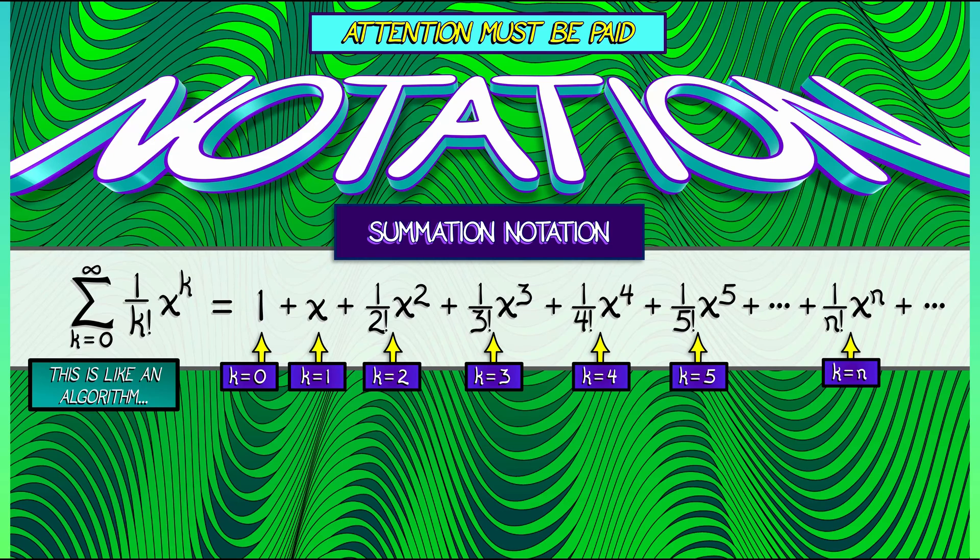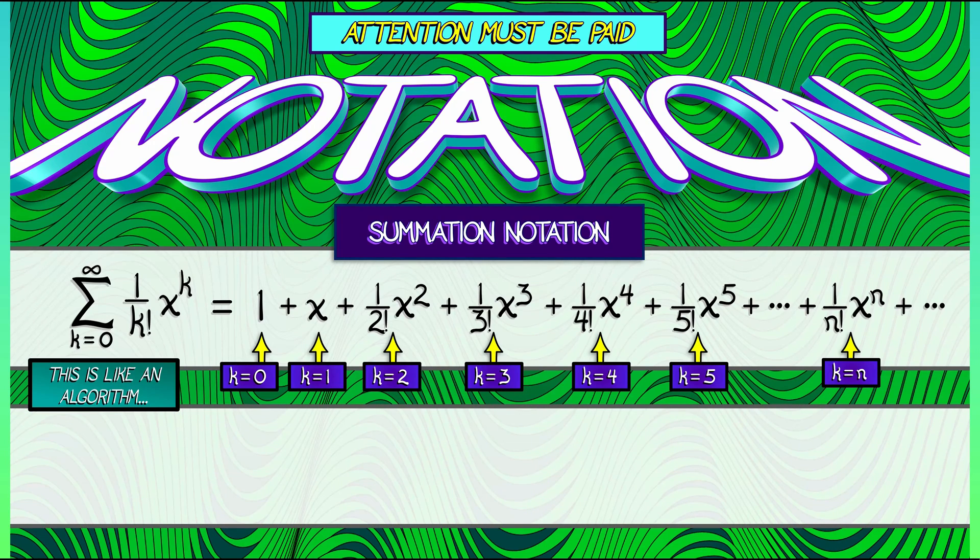Now, with this notation, you can specify any series you like. For example, consider the sum as k goes from 1 to infinity of negative 1 to the k plus 1 divided by k times x to the k. What is this going to give us?